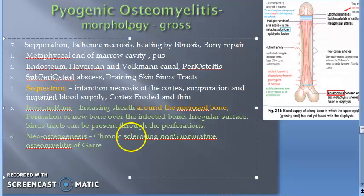Next, occasionally acute osteomyelitis may be contained to a localized area and walled off by fibrous tissue and granulation tissue. This is termed as Brodie's Abscess.